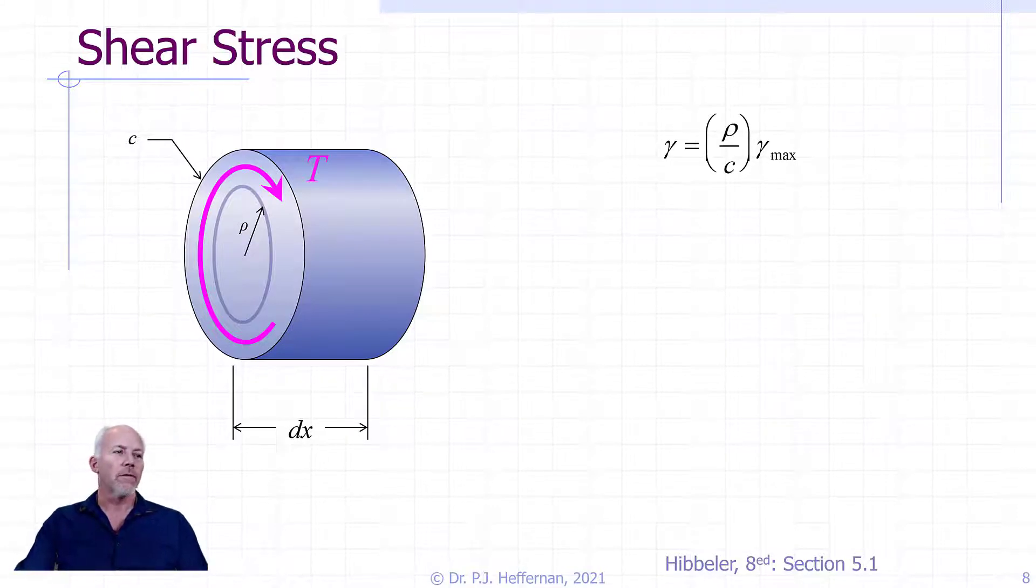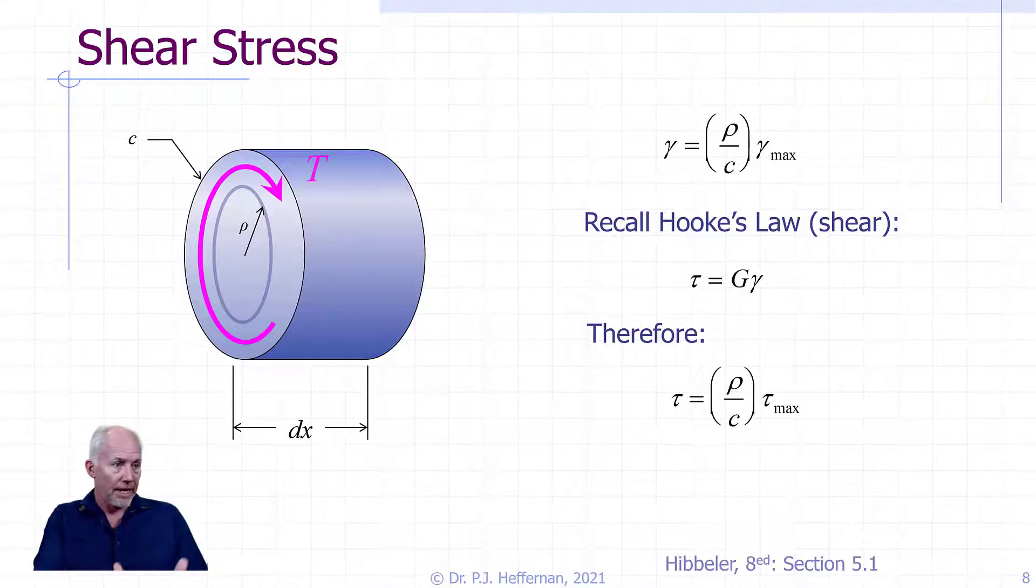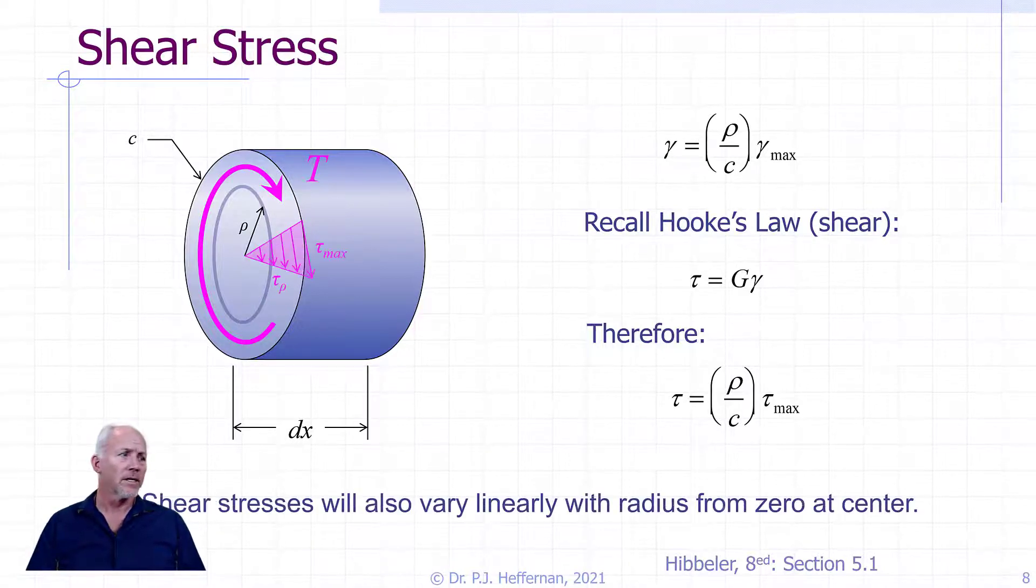So we know from the previous slide that our shear strain is equal to this ratio rho over C multiplied by gamma max. Now we also know Hooke's law for shear. Remember that the shear stress is equal to the shear modulus multiplied by the shear strain. And we can substitute that in to know that the shear stress is equal to that ratio rho to C multiplied by our maximum shear stress. So what does that tell us? It tells us that our shear stresses will also vary linearly with the radius from zero at the center to a maximum on the outside. And we see that shown pictorially here on the diagram.